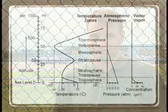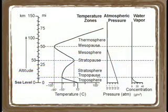Remember, precipitation can only occur in the bottom layer of the atmosphere, called the troposphere, according to your reference tables. This layer of the atmosphere is the only layer that contains water vapor.